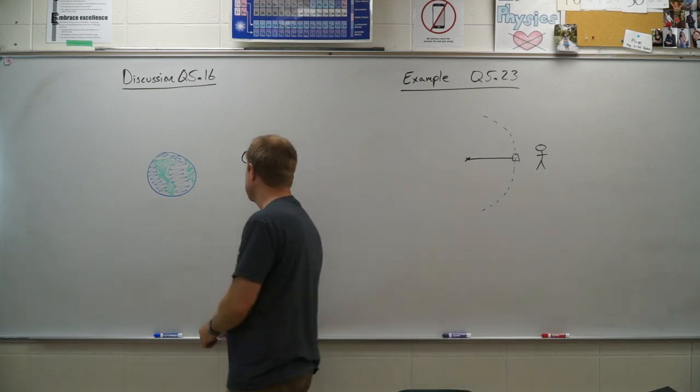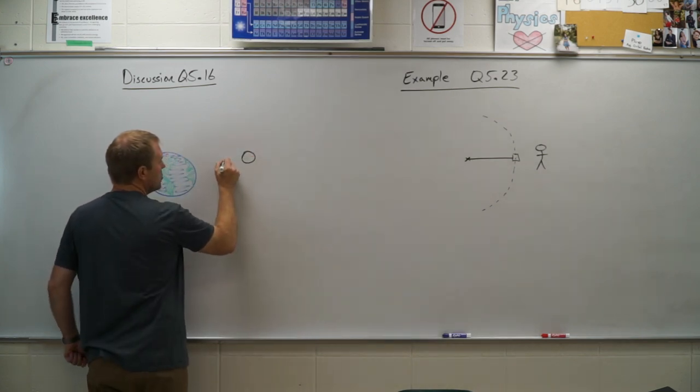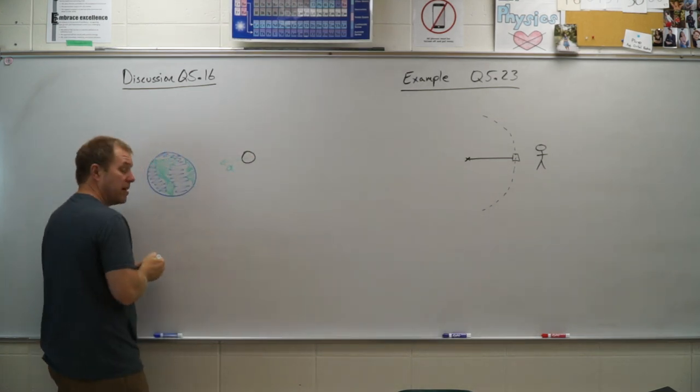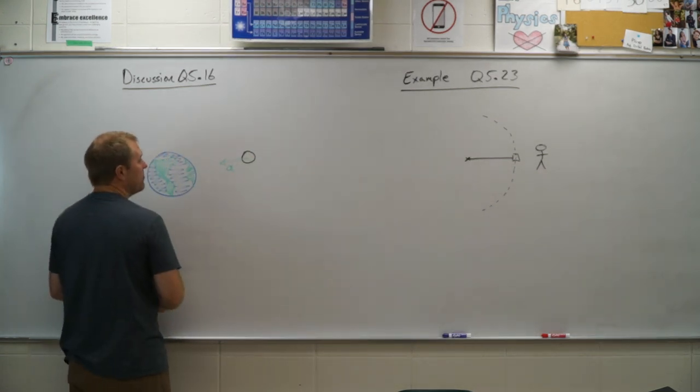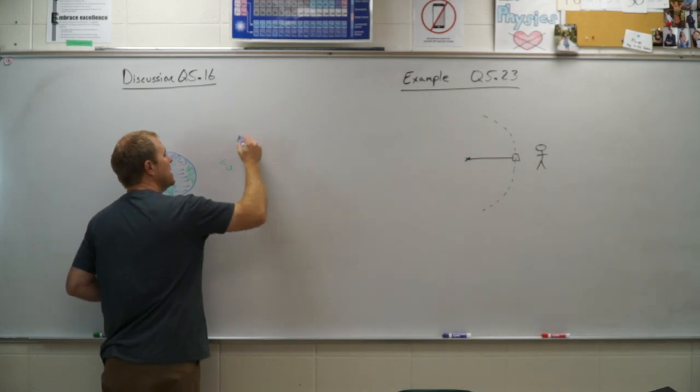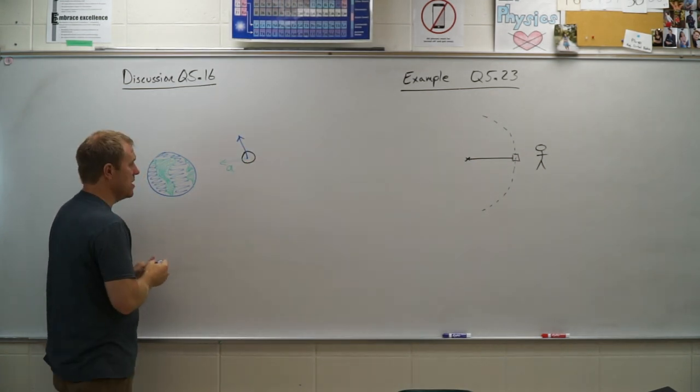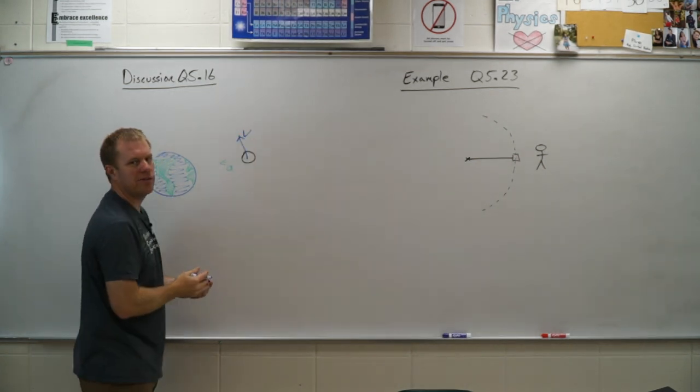Alright, so the reason for this one is we have the acceleration toward the earth because of gravity, but the velocity of the moon is tangent to the earth, assuming circular orbit there.